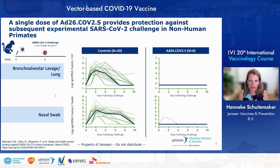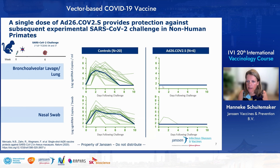We observed that the furin cleavage site knockout in combination with the double proline mutation gave a spike protein with a much better ability to bind to the ACE2 receptor, and this resulted in increased immunogenicity as demonstrated in a non-human primate study. We analyzed immunogenicity after a single dose of vaccine and observed that this design — furin cleavage site knockout plus double proline stabilizing mutation — gave optimal immunogenicity in both binding antibodies and, more specifically, neutralizing antibodies. This was our lead candidate, called Ad26.COV2.S.